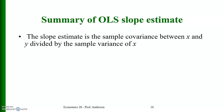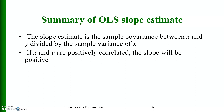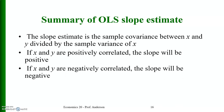The slope estimate is the sample covariance between x and y divided by the sample variance of x. That is, beta_1_hat = Σ(x_i - x_bar)(y_i - y_bar) / Σ(x_i - x_bar)². If x and y are positively correlated, the slope will be positive; if inversely related, the slope will be negative. We only need x to vary in our sample.